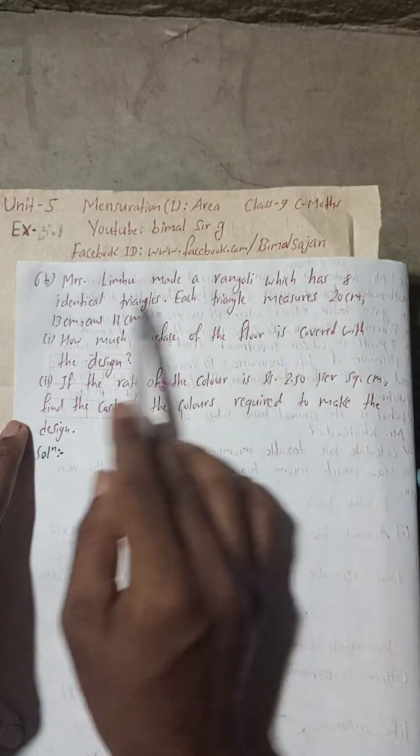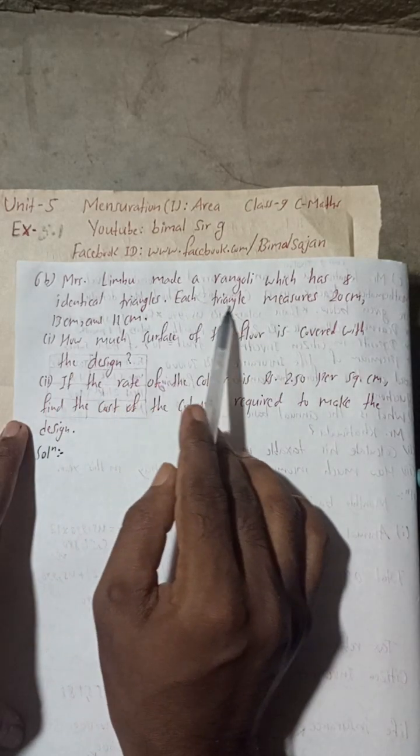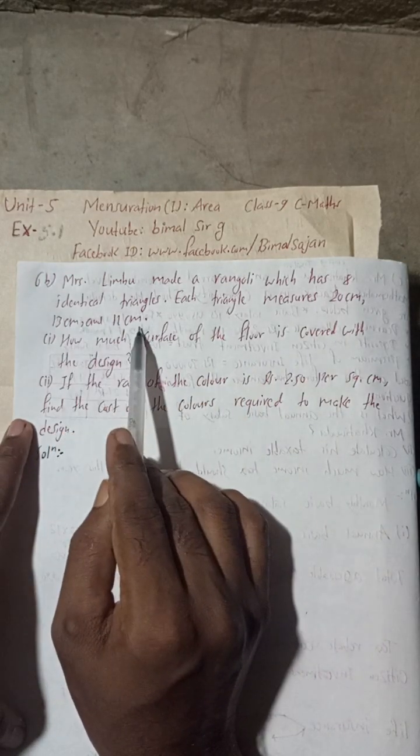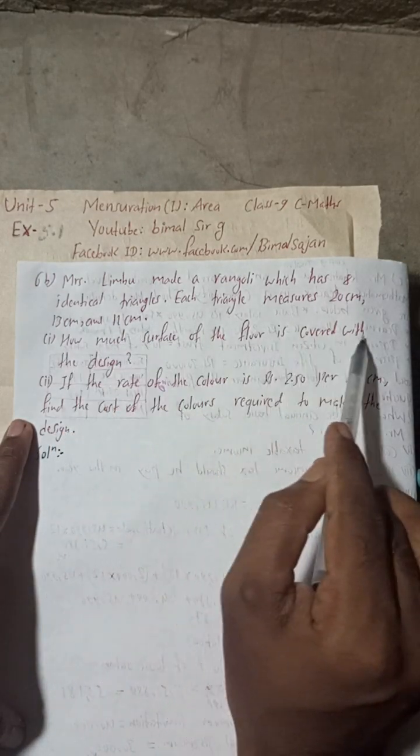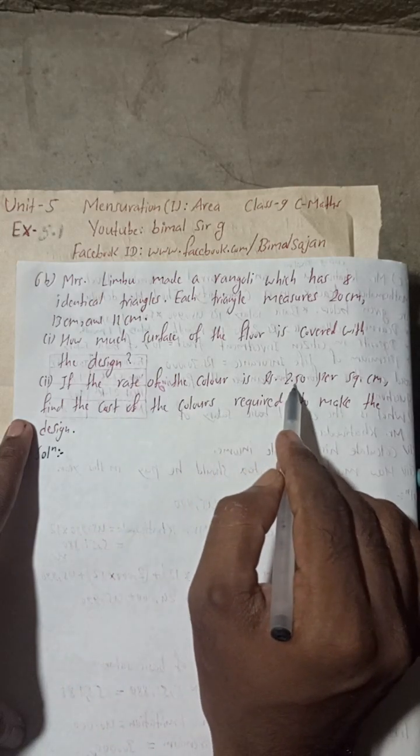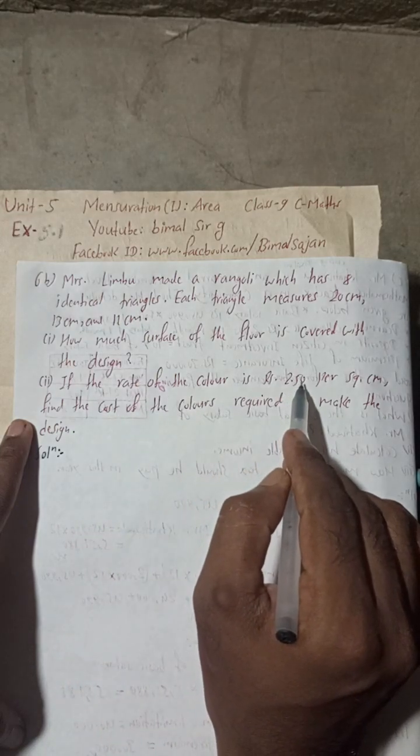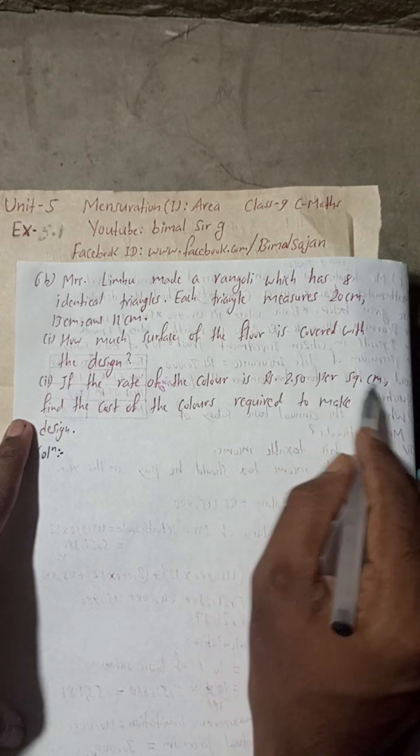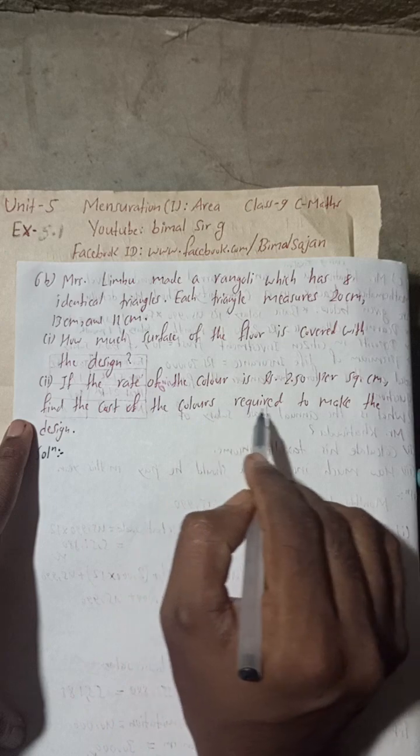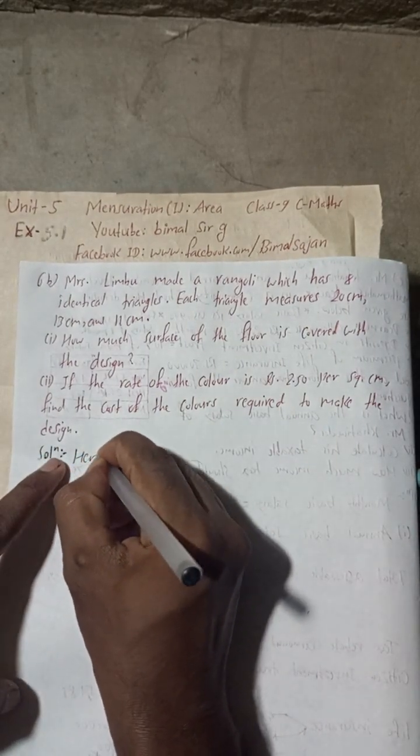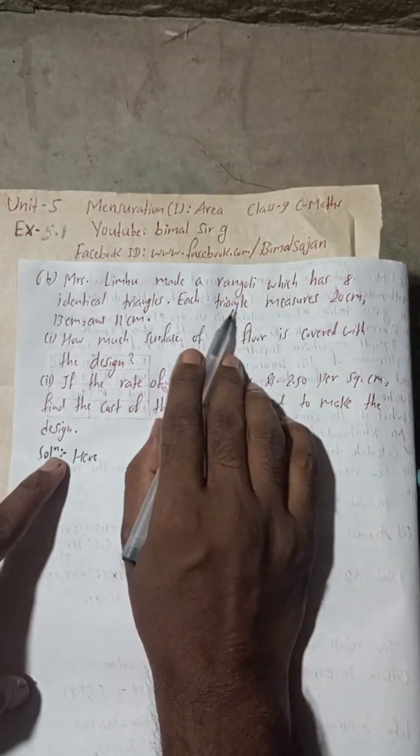Mrs. Limbu made a Rangoli which has eight identical triangles. Each triangle measures 20 cm, 13 cm, and 11 cm. How much surface of the floor is covered with the design? If the rate of color is Rs 2.50 per square cm, find the cost of the colors required to make the design.